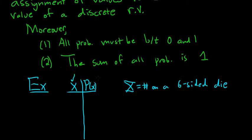Notice we use lowercase x for the actual values and capital X for the random variable. On a six-sided die, you have six choices — one through six. So those are the six possible values of our discrete random variable capital X.